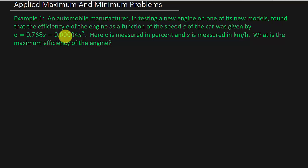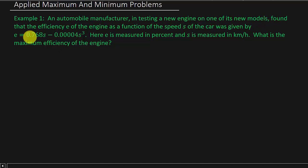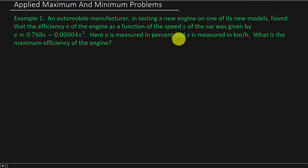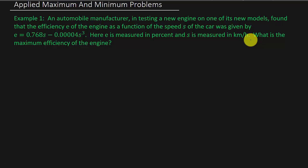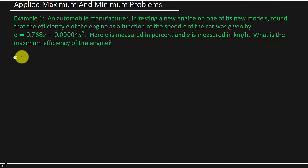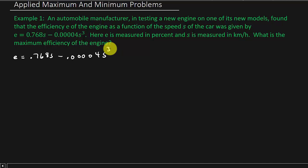An automobile manufacturer, in testing a new engine on one of its new models, found that the efficiency E of the engine as a function of the speed S of the car was given by E equals 0.768S minus 0.00004S cubed. Here, E is measured in percent and S is measured in kilometers per hour. What is the maximum efficiency of the engine? So we want to maximize this, and luckily they give us the equation, so this one's going to be easy to solve.